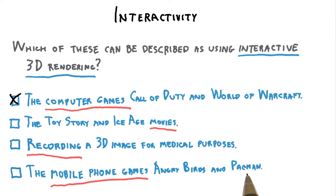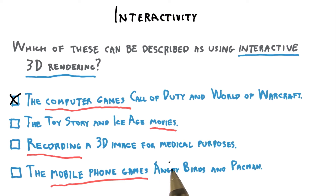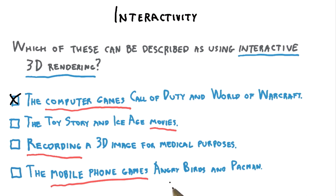Pac-Man is interactive and is rendered, but the scene described is entirely in 2D. Games such as Angry Birds are also in this category, where an illusion of 3D is achieved by having 2D layers that move at different speeds. Mobile phones and tablets can certainly perform 3D rendering, but these particular games don't need such capabilities.